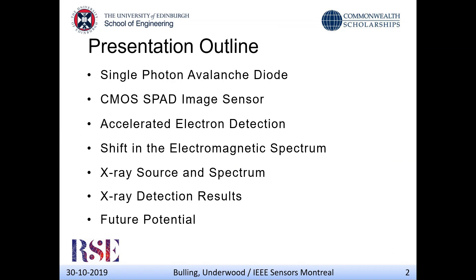A quick overview of the presentation: first we'll give a brief discussion on what single photon avalanche diodes are and their advantages, then move on to the actual image sensor used for this experiment. Then an overview of precursor work which motivated us to do this experiment, then discussion on using X-rays or potential X-ray detection, shift in the electromagnetic spectrum, then the X-ray source itself and its respective spectrum, and finally the results and future potential.